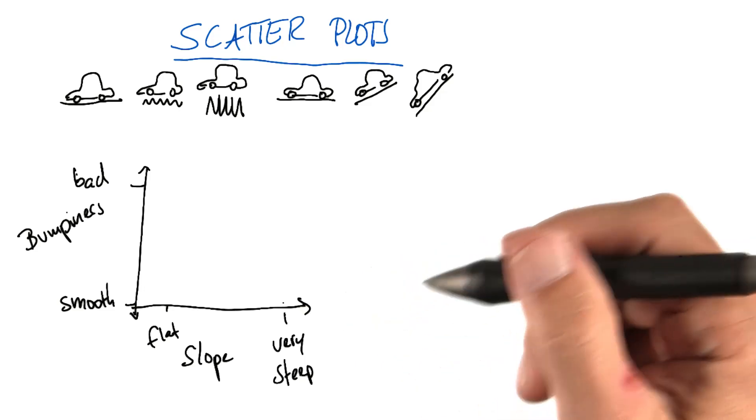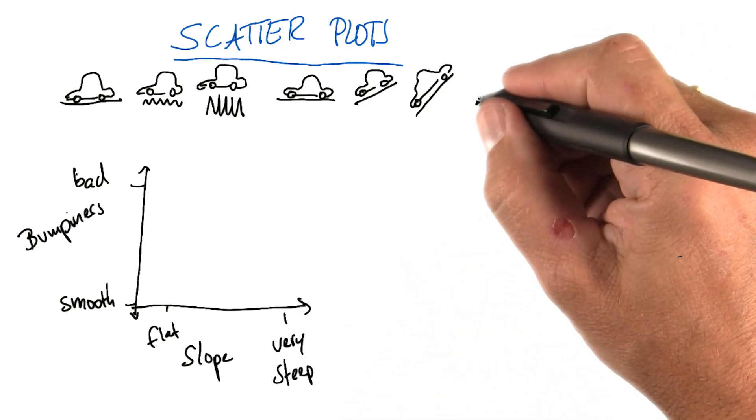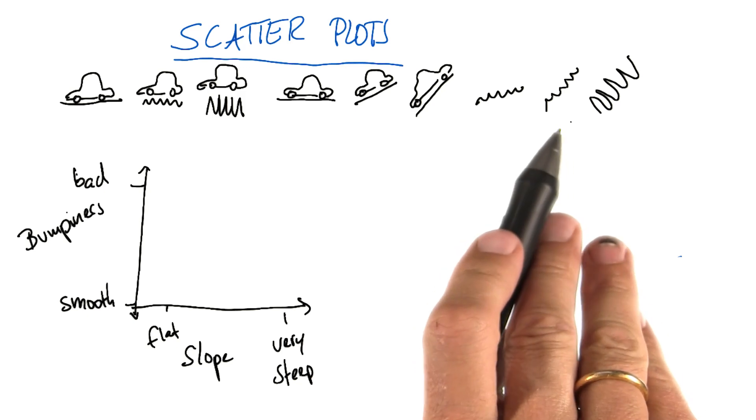And again, the steeper it is, the slower we wish to drive. And those things could co-occur as shown in these three graphs on the right side.